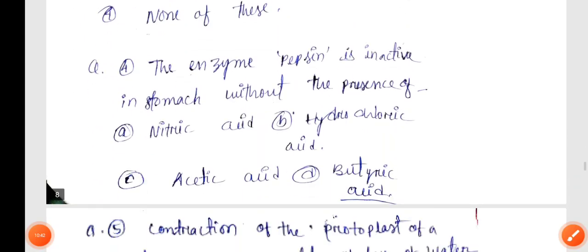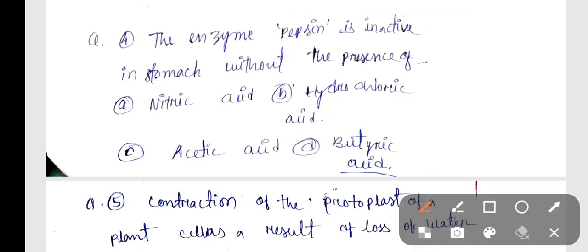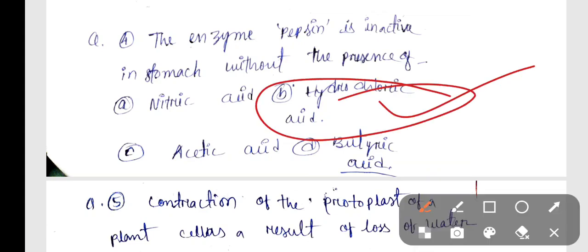Next question, Biology Q3: The enzyme pepsin is activated by — correct answer is hydrochloric acid, Option B is correct.